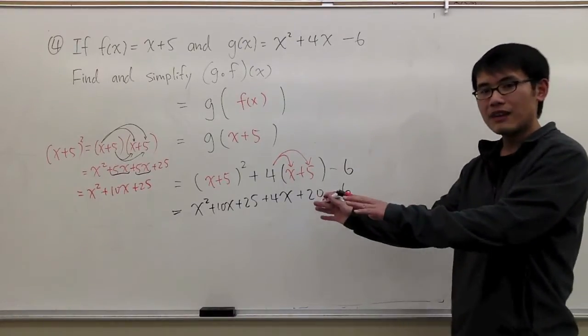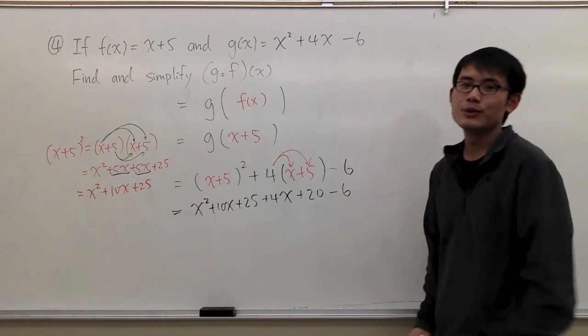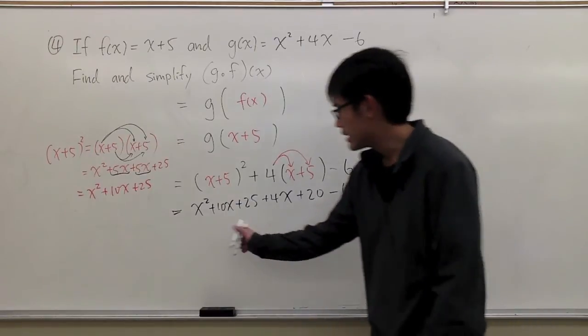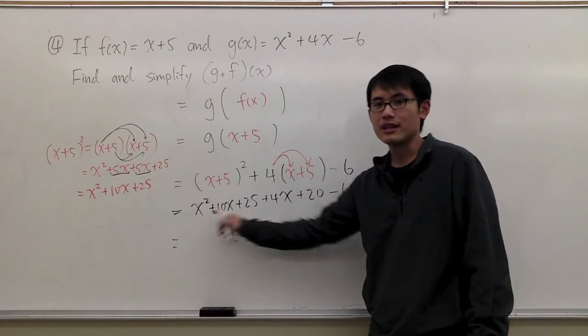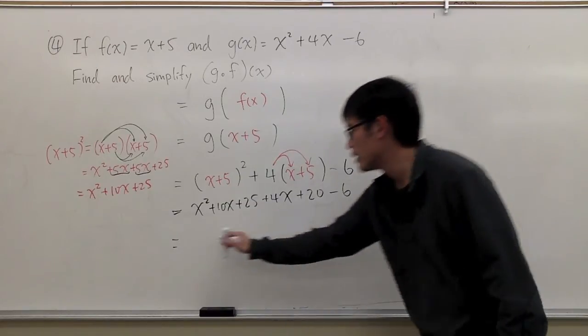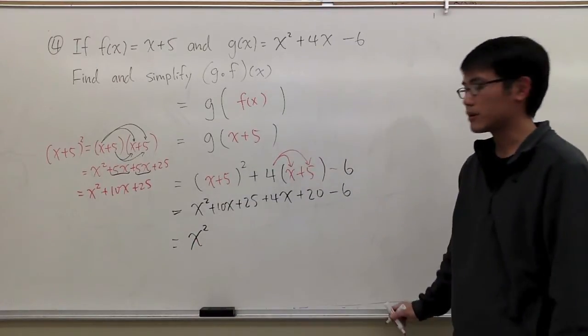So you see that we multiply everything out. And now we are going to combine terms. Let's see. I notice that we just have the x squared right here. So that's the only x squared we have. It doesn't combine with anything else. Let me just bring it down.